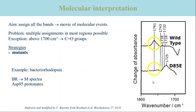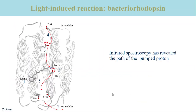The positive band appears in the M intermediate, which means that aspartate 85 becomes protonated in the reaction. Using many more single amino acid replacements, infrared spectroscopy has identified all groups that are involved in proton pumping by bacteriorhodopsin.